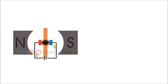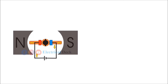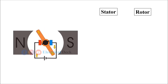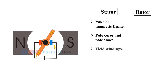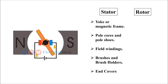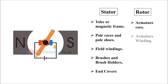At first, let us see the construction of DC generator. DC generator is mainly divided into two parts: stator and rotor. Stator consists of stationary parts, which include the core magnetic frame, pole cores and pole shoes, field windings, brushes and brush holders, and end covers. Rotor consists of rotating parts like armature core, armature winding, commutator, and shaft.